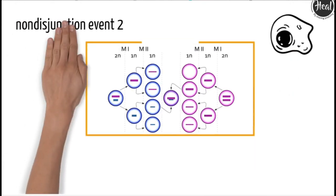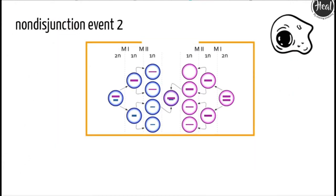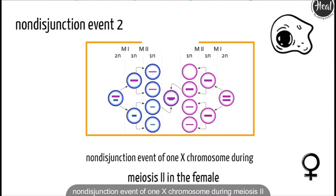Second event like birth of a cell with karyotype XXY due to a nondisjunction event of one X chromosome during meiosis 2 in the female.